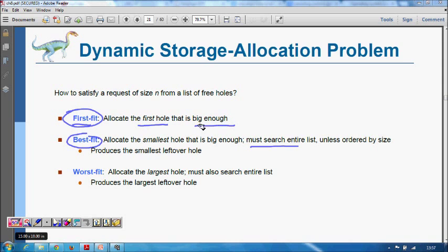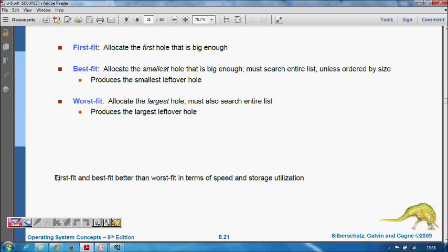Worst fit: allocate the largest hole. Again, we need to search the entire list. This produces the largest leftover hole. First fit and best fit are better than worst fit in terms of speed and storage utilization.